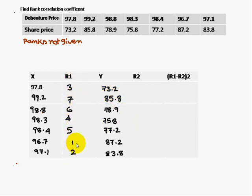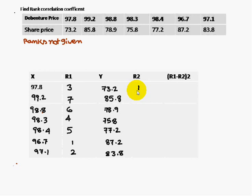Similarly, ranks must be assigned to the share price (y values) using the same procedure: give rank 1 to the least value. Here, 73.2 is the least value and gets rank 1. The next highest value, 75.8, gets rank 2, and so on.